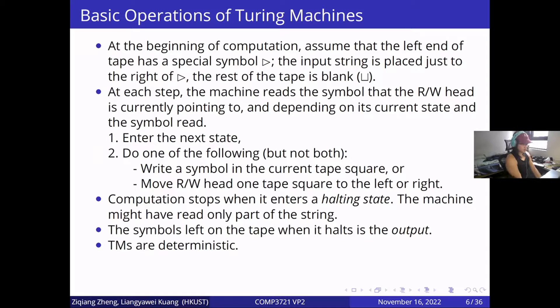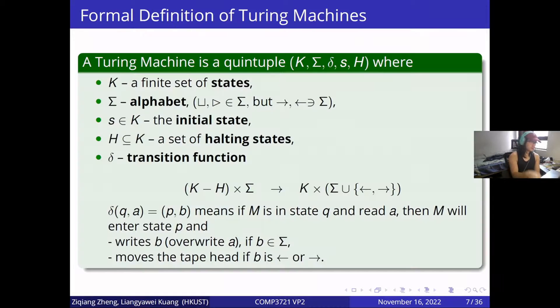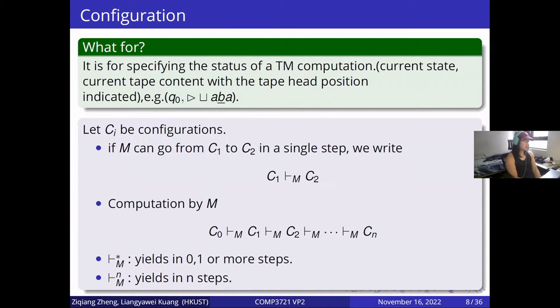Turing machines are deterministic. Formal definition is defined by a quintuple that is similar to finite automata. The configuration is for specifying the status of a Turing machine computation. The details are shown below.